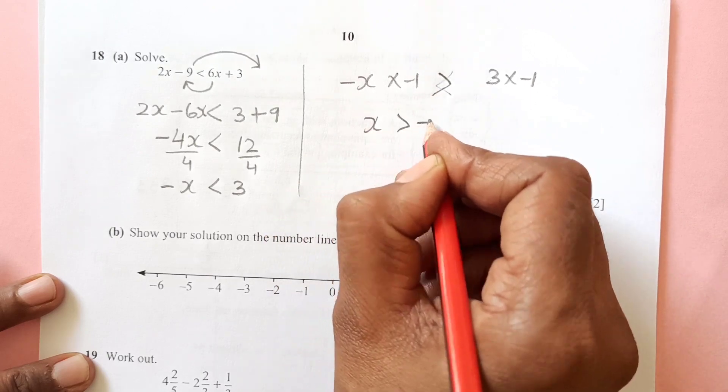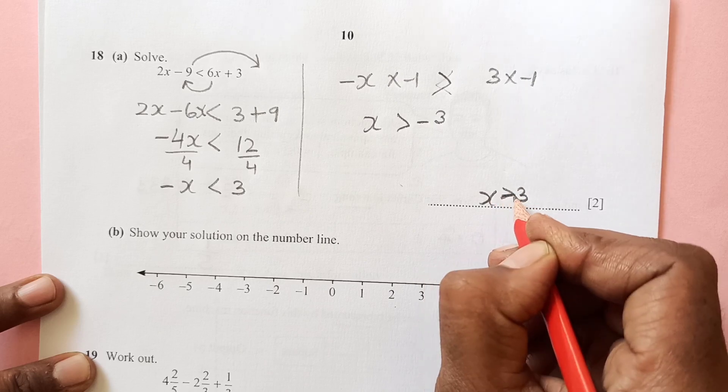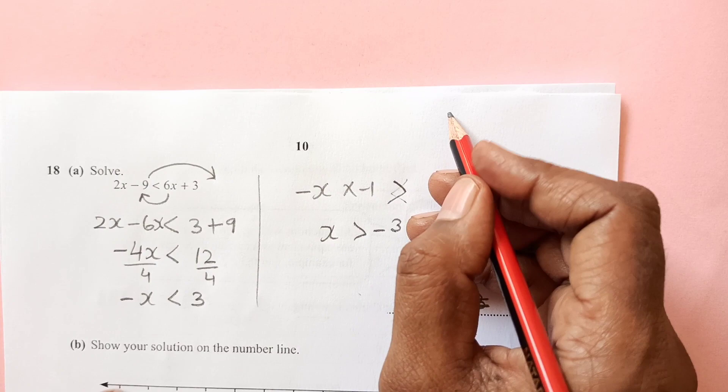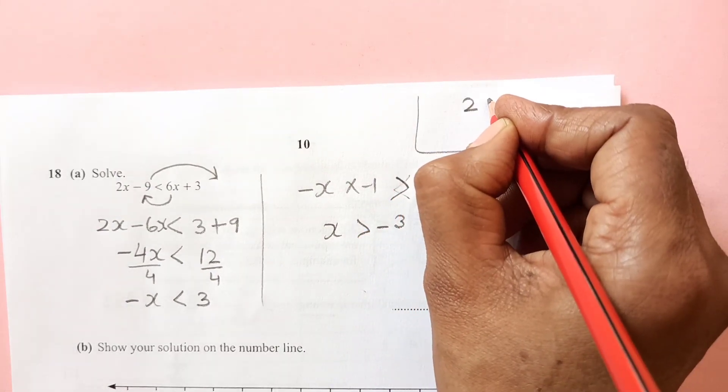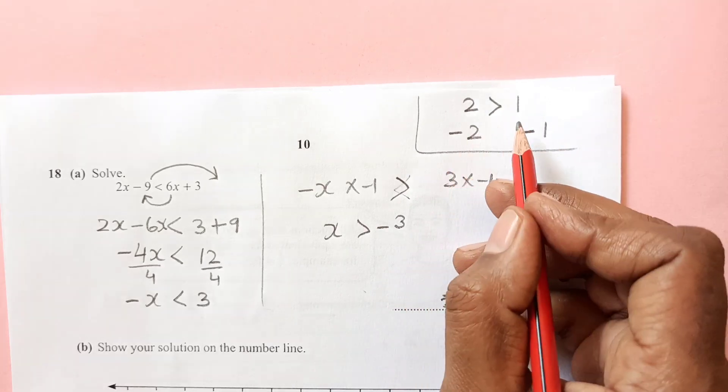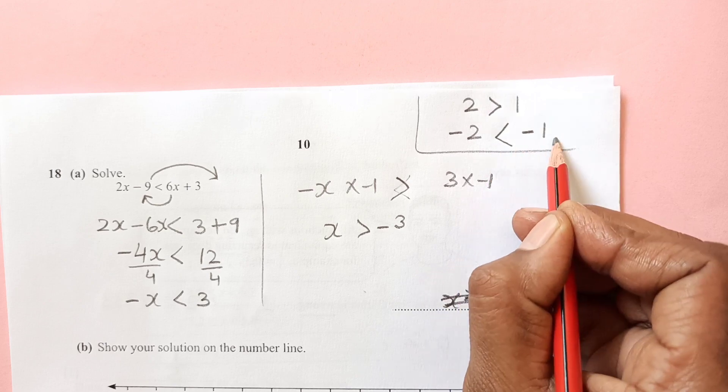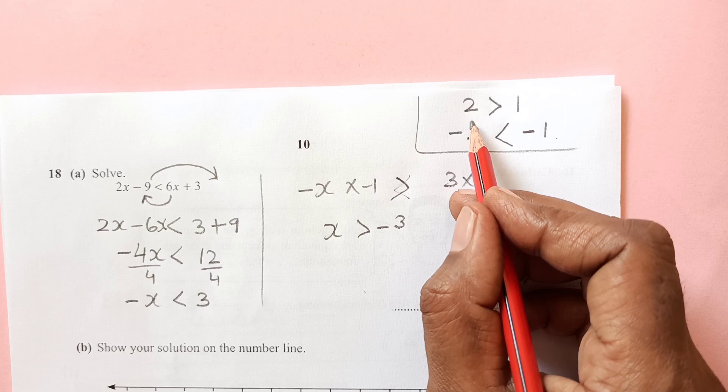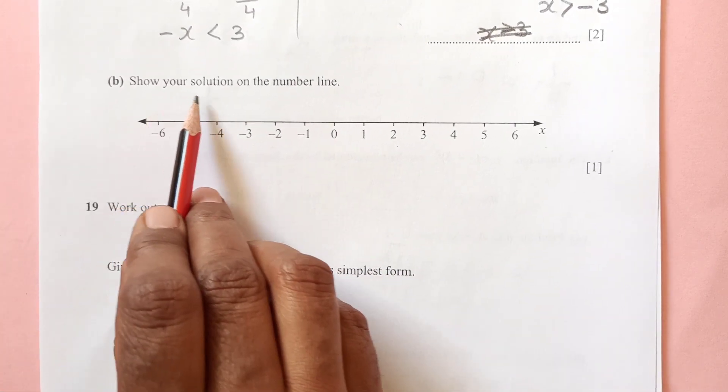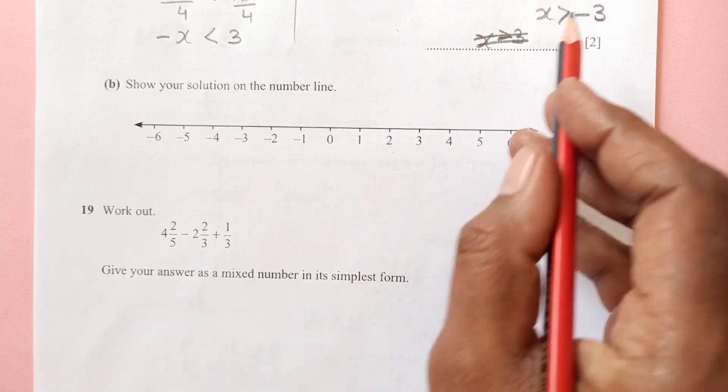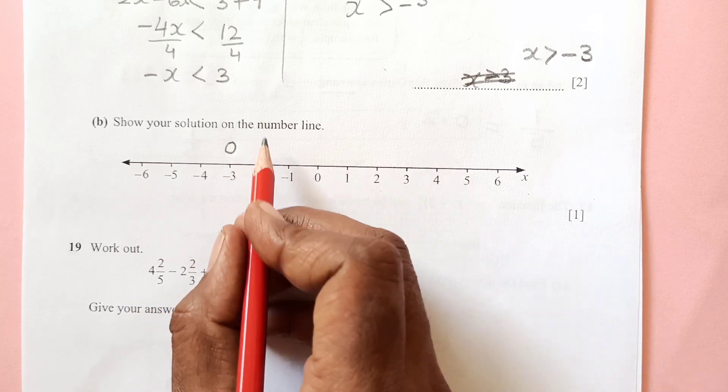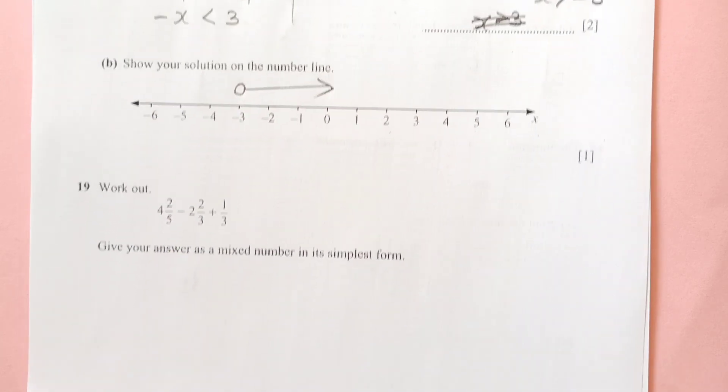x is greater than minus 3. Why have I changed the sign? Let me show you an example. If 2 is greater than 1, what about negative 2? If we multiply both sides by negative 1, we have negative 2 and negative 1. Which one is greater now? Negative 1 is greater. That is why when you divide and multiply any number or variable by a negative, the sign of inequality will change. Now part b: show your solution on a number line. This solution x greater than minus 3 - negative 3 is here. We will put a hollow circle because there is no equal sign, and greater than is all around this side. So we can just put an arrow on this side.